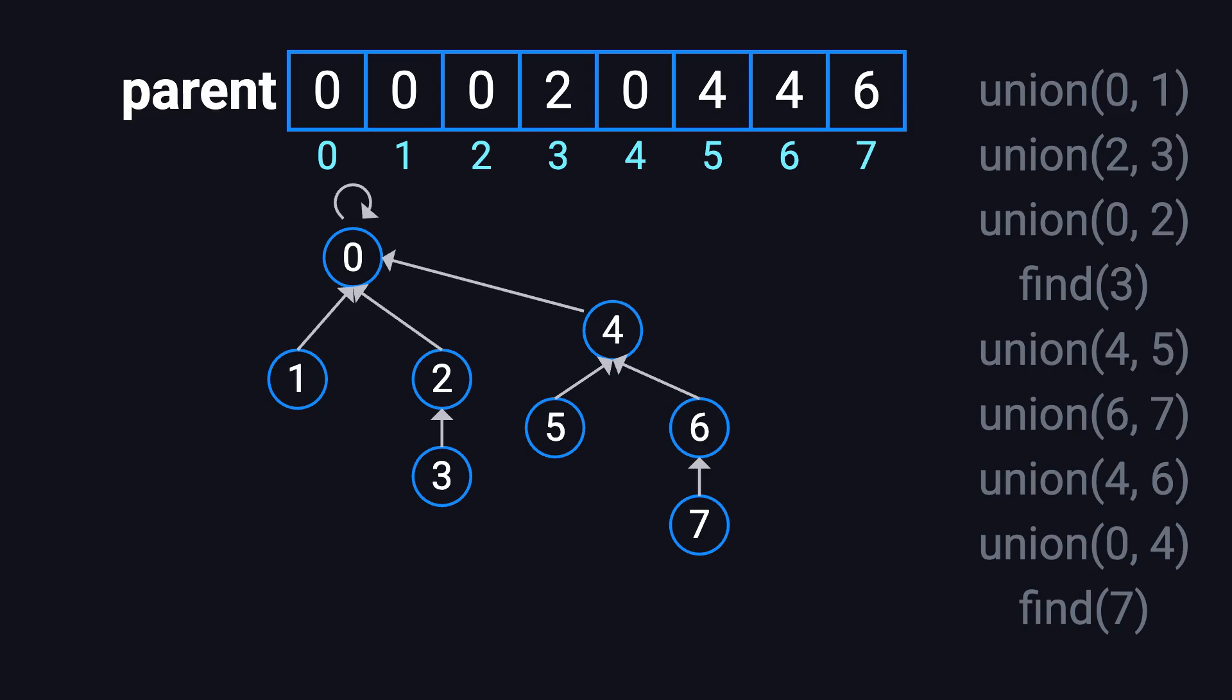Through this example, you can see that each time we perform a union, we're essentially creating manager-employee relationships between elements. And every time we perform a find, we trace upward through those relationships until we reach the top boss, the root of the group.